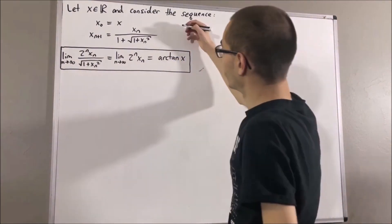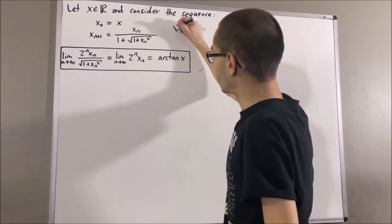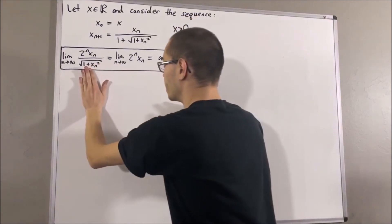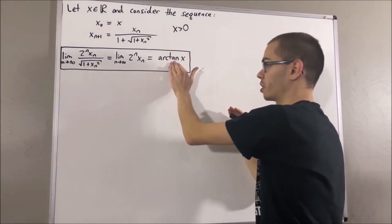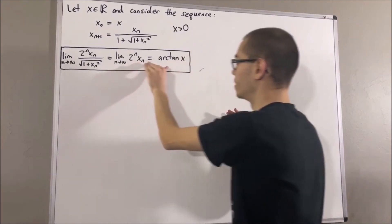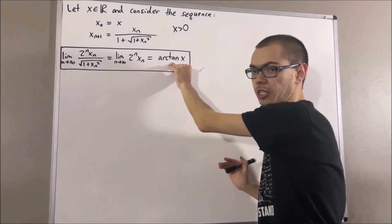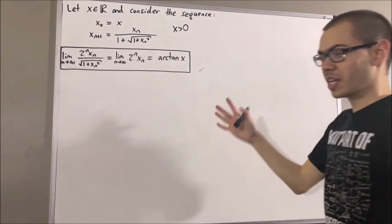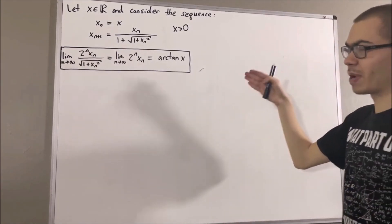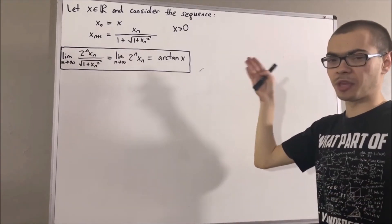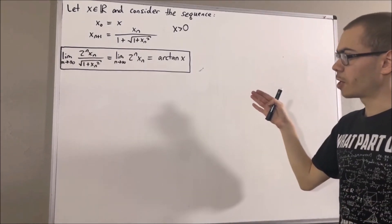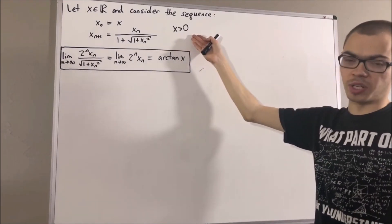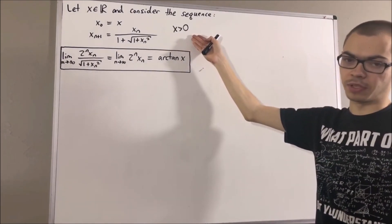In fact, if x is greater than zero, then this sequence is increasing to the arctangent of x while this sequence is decreasing to the arctangent of x. Our goal in the video is to see geometrically how that happens. We're only going to be considering the case x is greater than zero in this video.